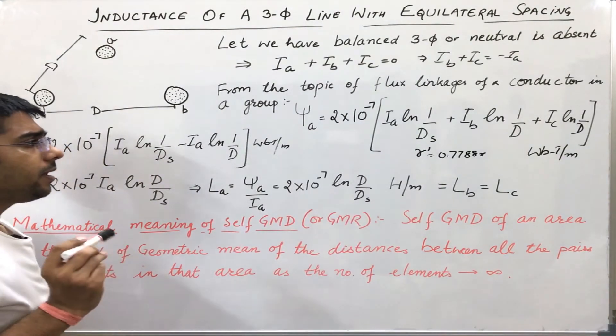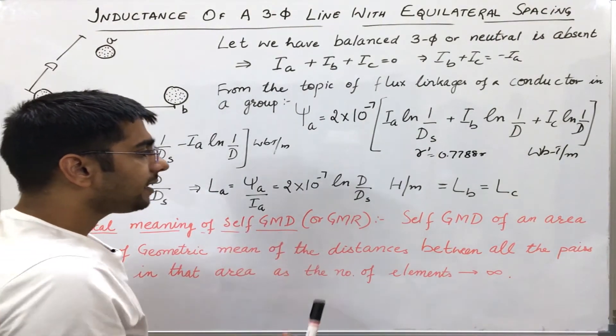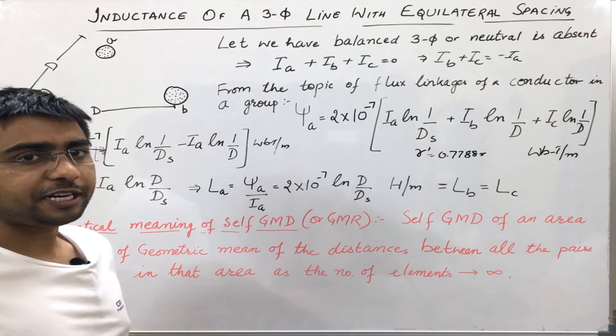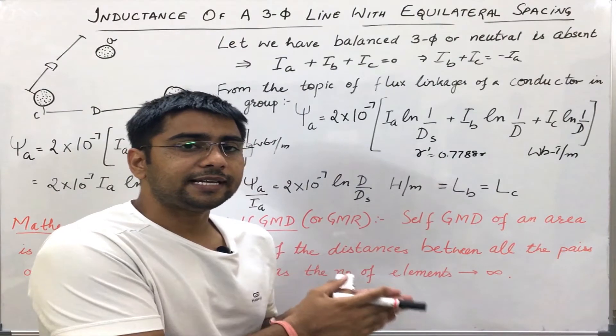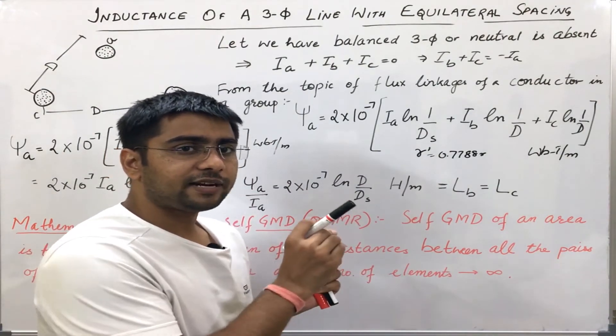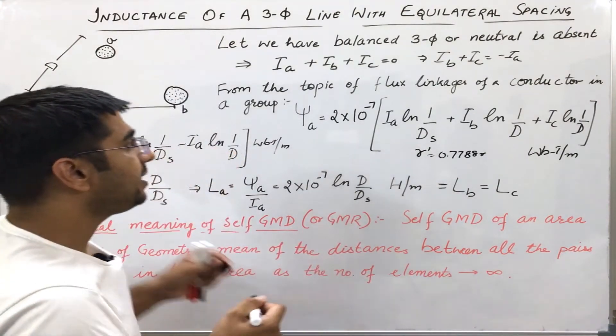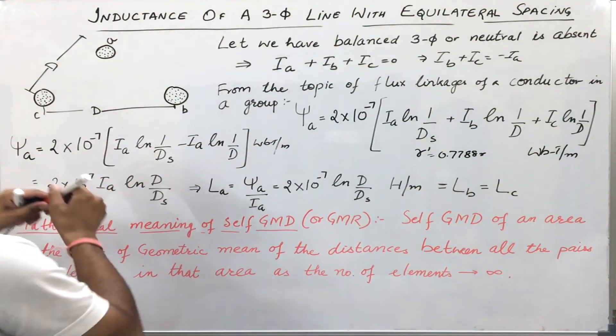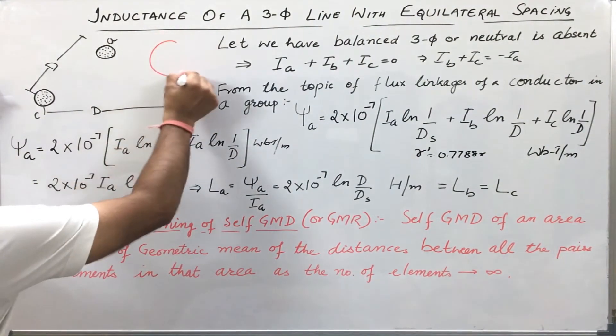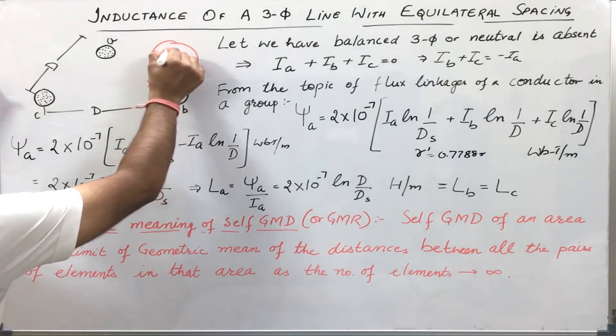Now, as I have already told, self-GMD or GMR is simply the geometric mean of the distances between the strands of the same conductor. Let us say I have a conductor X here.